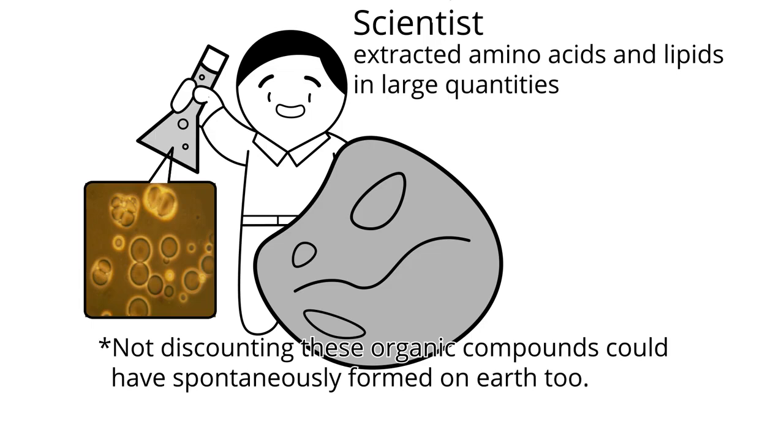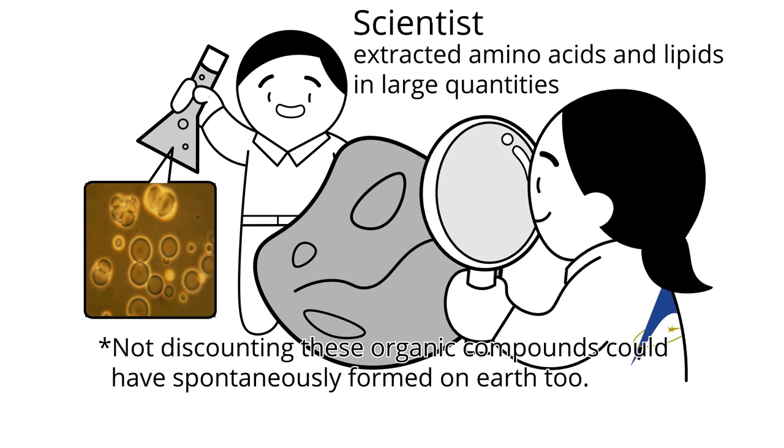But from the Murchison meteorite, we know for sure that the starting materials of life, at least to some extent, did come from outer space.